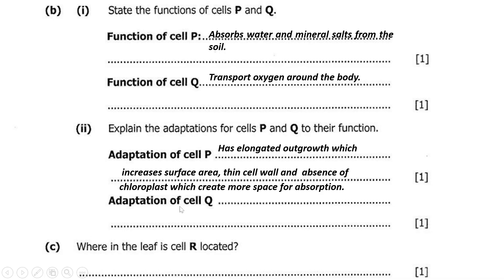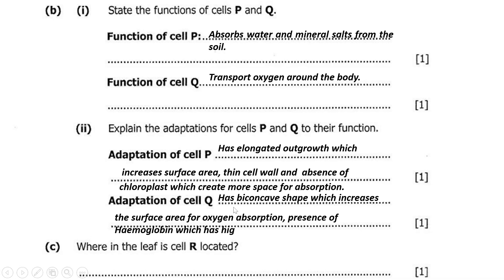Now let's talk about adaptations of cell Q, the red blood cell. It has a biconcave shape which increases the surface area for oxygen absorption. We can also say presence of hemoglobin which has a high affinity for oxygen — red blood cells have hemoglobin, a chemical substance which binds with oxygen for transportation. Also, red blood cells do not have a nucleus, which increases space for hemoglobin.